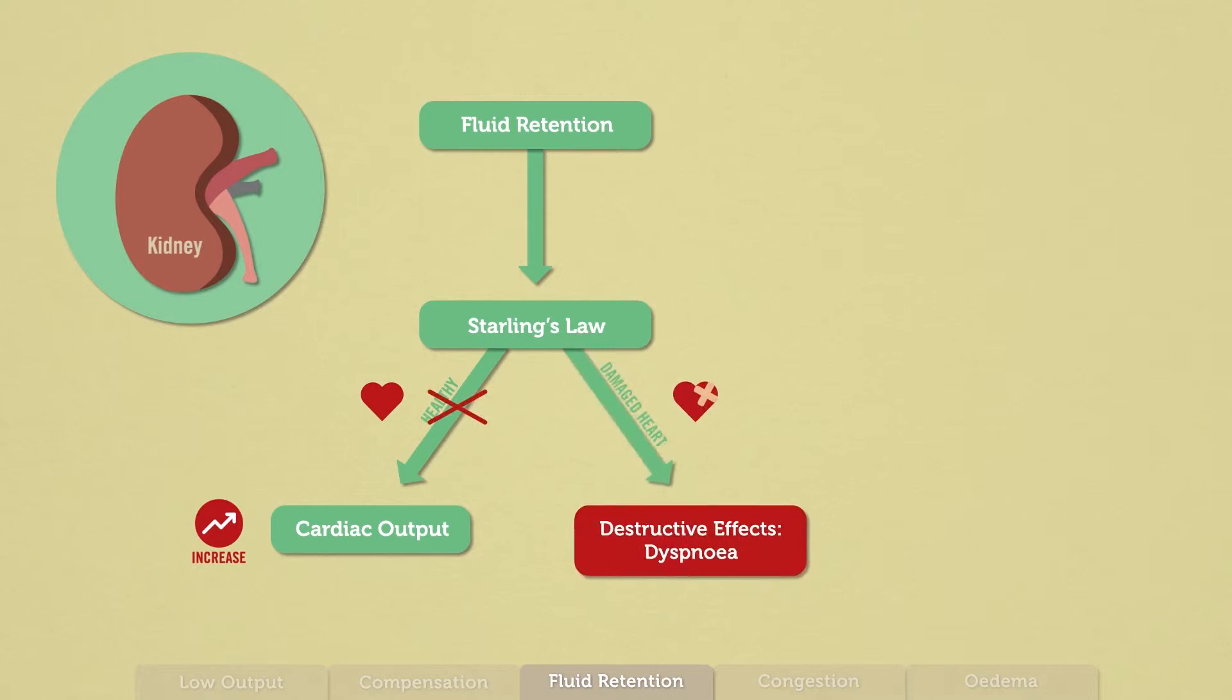Not always. In a damaged heart, Starling's Law may be dysfunctional so that the kidney's fluid retention during heart failure only partially helps to compensate for the heart's weakness. Meanwhile, the fluid retention has a range of destructive effects throughout the rest of the body. What kind of destructive effects does the fluid retention cause?